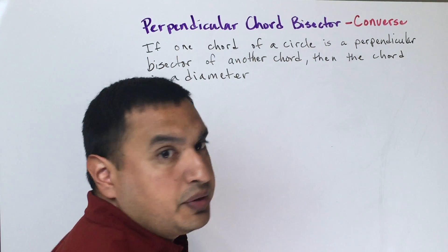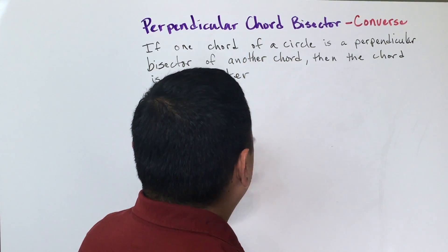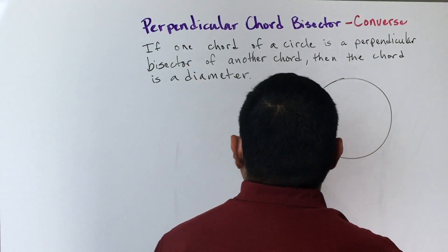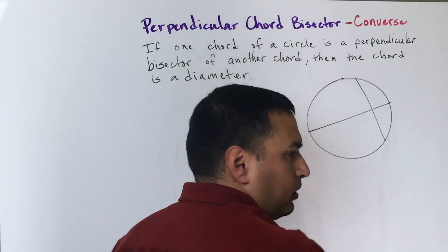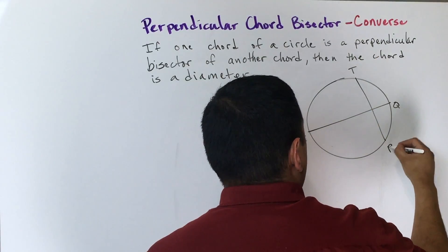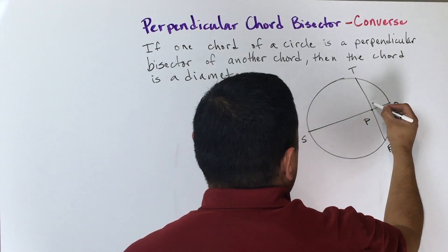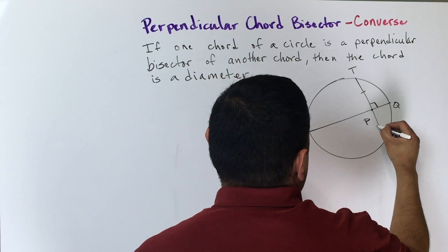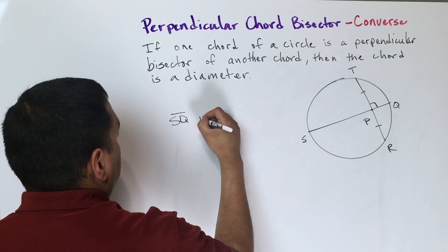The converse — the Perpendicular Chord Bisector Converse — states that if one chord is a perpendicular bisector of another chord, then the first chord is a diameter. So if chord SQ is perpendicular to chord TR at point P, and TP is congruent to RP, then SQ must be a diameter.